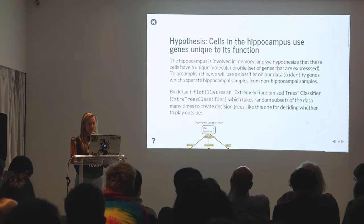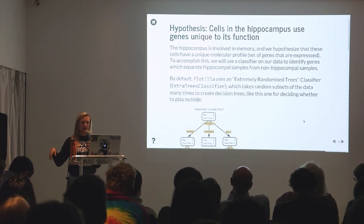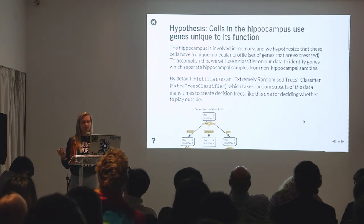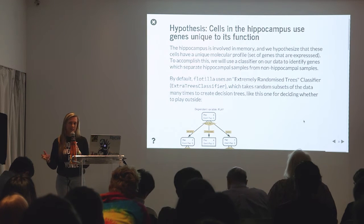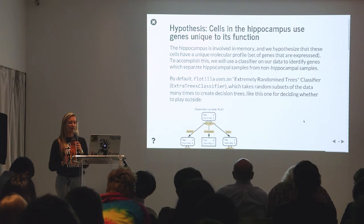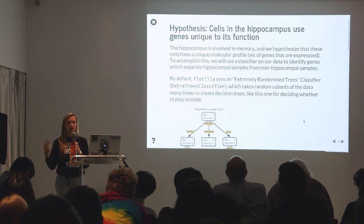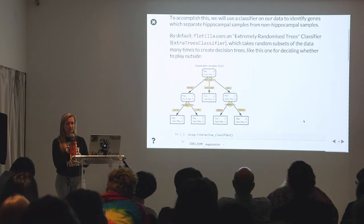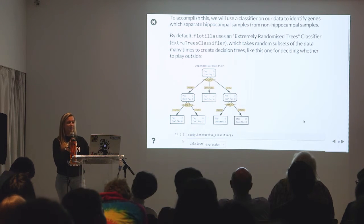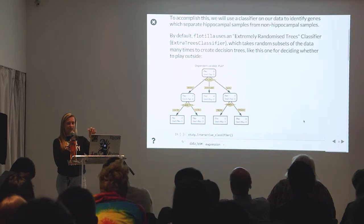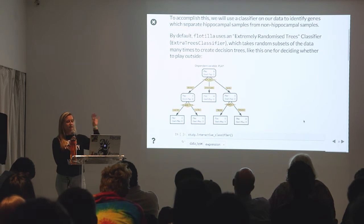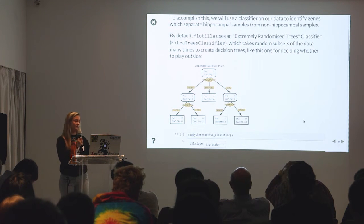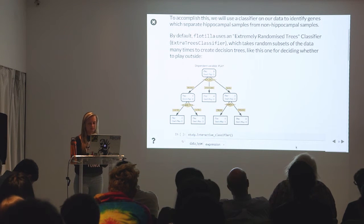So next, we've explored our data from the initial exploration. Now we want to take a more biological hypothesis: that cells in the hippocampus have expressed genes that are unique to its specific function. If I understand it correctly, the hippocampus is involved in memory formation. So we have the hypothesis that there are specific genes only used in the hippocampus for this function. The default classifier we use is extremely randomized trees. This means we take random subsets of data — subsets of samples, subsets of features — fit a decision tree to that subset, see how well that tree works outside of that subset, and do that many thousands of times. We see each feature many times.